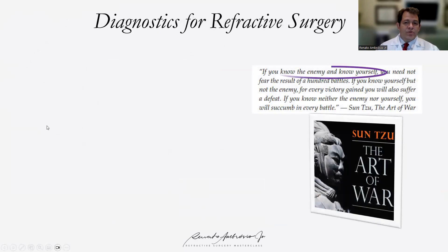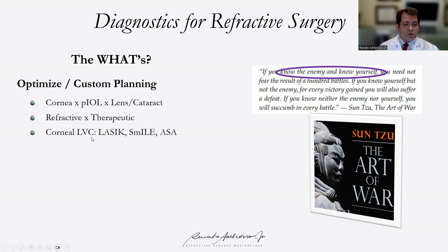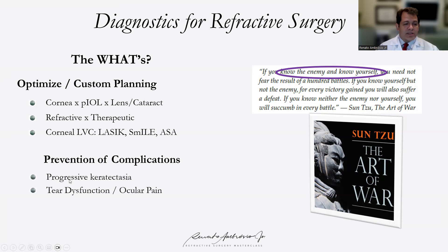When we talk about diagnostics and refractive surgery, we need to understand what we are looking for. As in the Art of War, we have to understand ourselves and understand the enemy so that we can win the battles. The battles are the what's — how to customize and optimize the planning, whether you do corneal surgery, phakic IOL, or cataract surgery with a refractive goal. We want to prevent complications, the leading one being progressive ectasia, but the most common is tear dysfunction, and ocular pain is a very important situation as well.